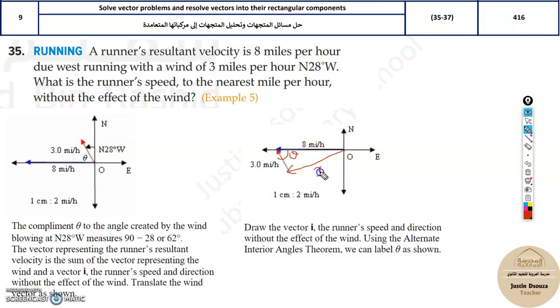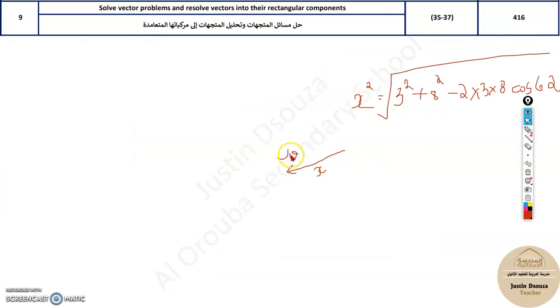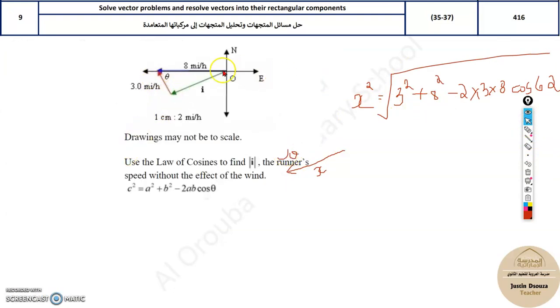Let me consider this as x. To find x, it will be x squared equals the other two sides squared. So it will be 3 squared plus 8 squared minus 2 times 3 and 8 times cosine of the angle opposite to the unknown, that is 62. You can put this in a calculator and take the square root. That would be the answer.